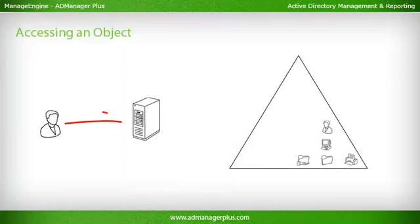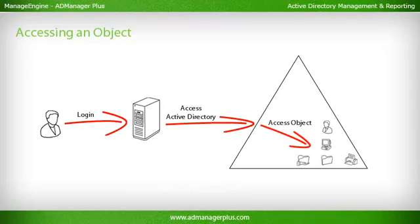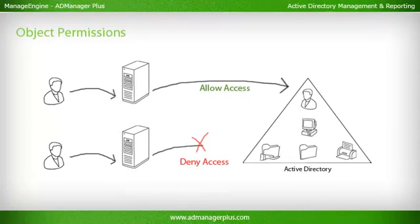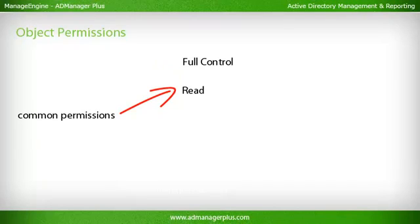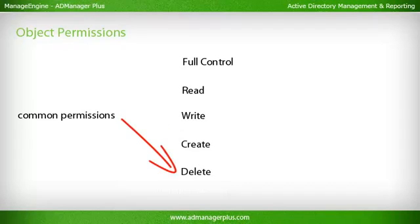Accessing an Object: To access an object, a user must have access to the Active Directory domain, access to the Active Directory, and access to the specific object. Object Permissions allow or deny access to an object and allow a user or object to carry out specific operations or actions on other objects. Some of the most common permissions are: Full Control, Take Ownership, Modify Permissions, Read (view object properties), and Write (can read an object's content and attributes but cannot change permissions or become the owner).